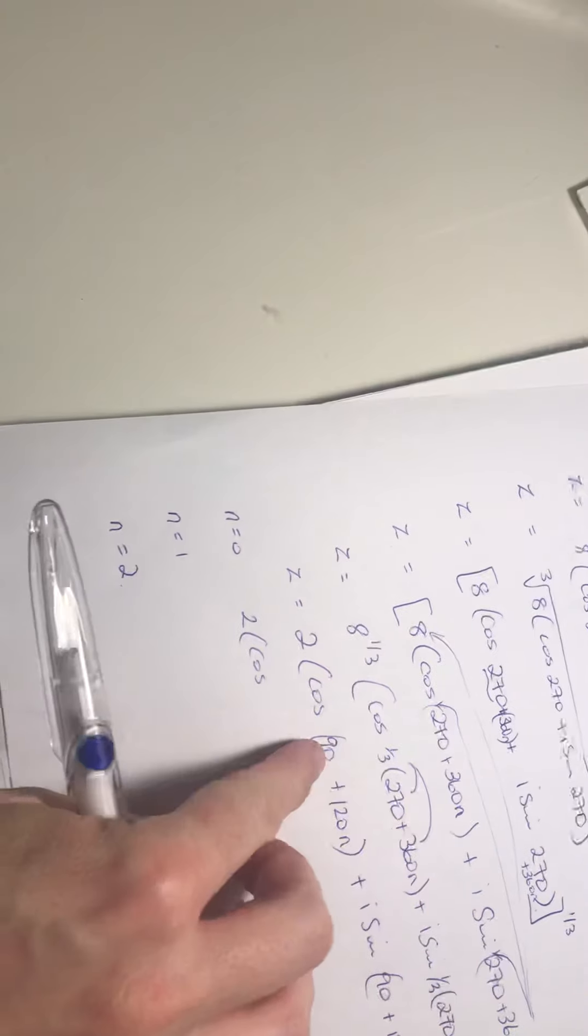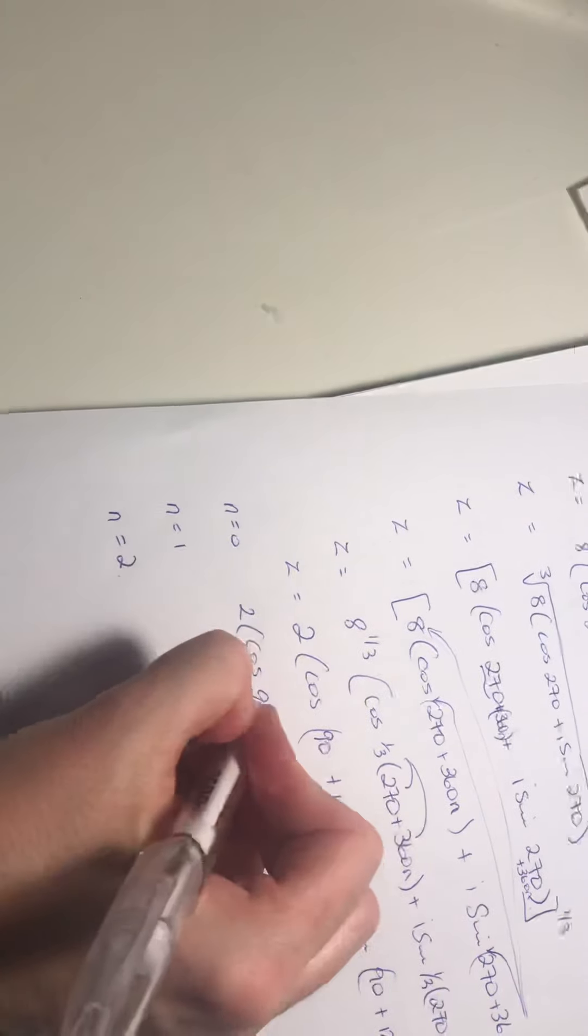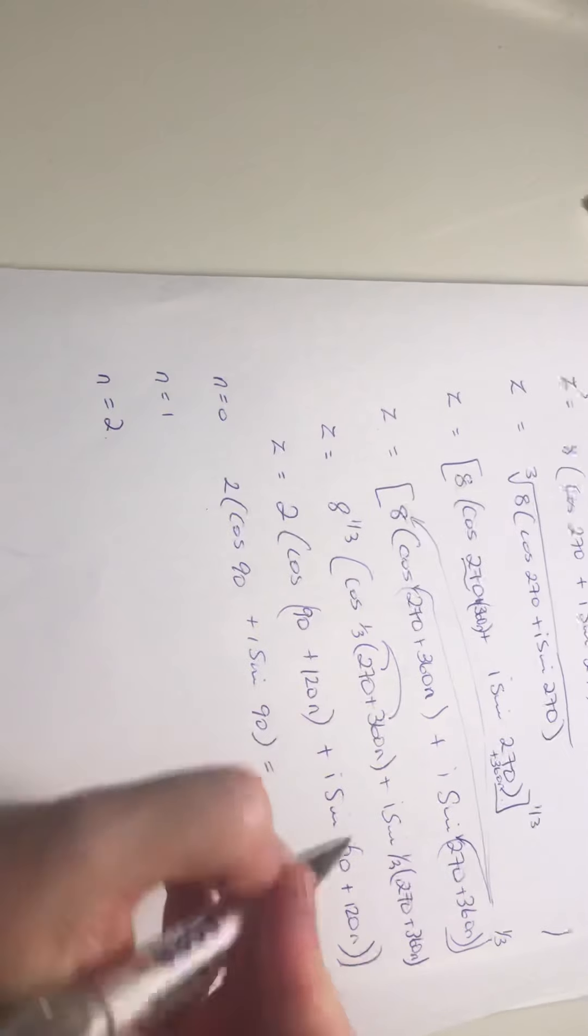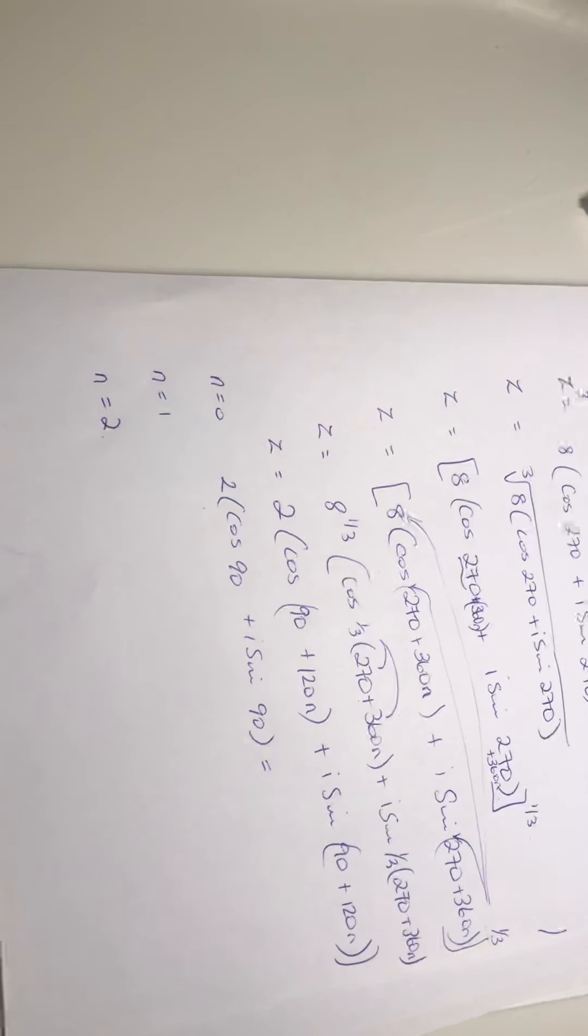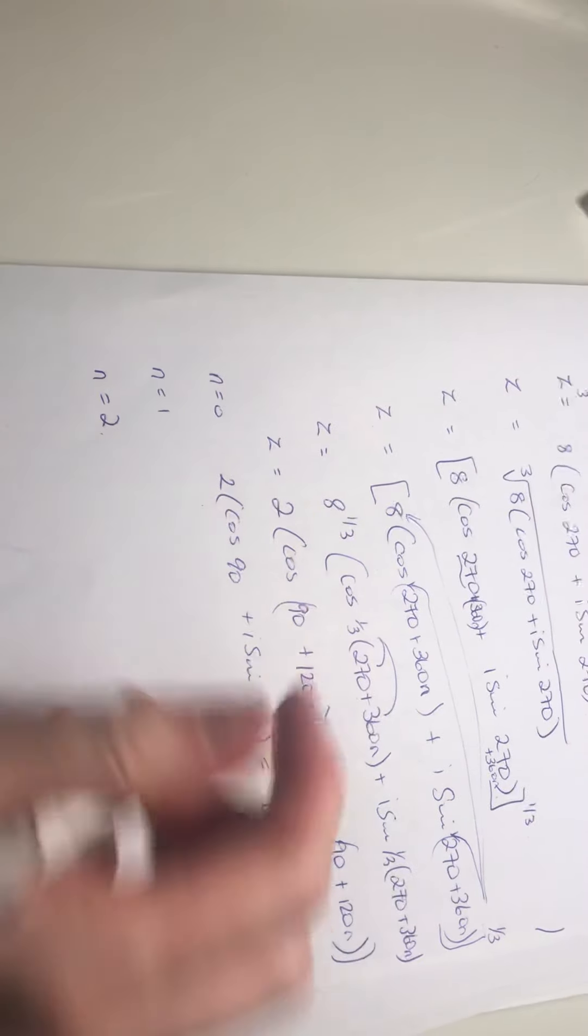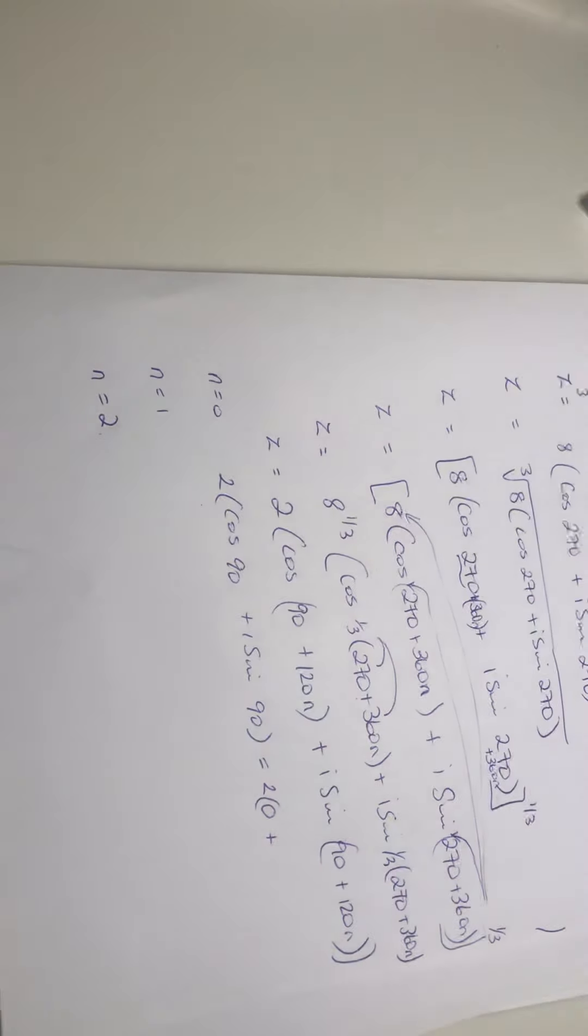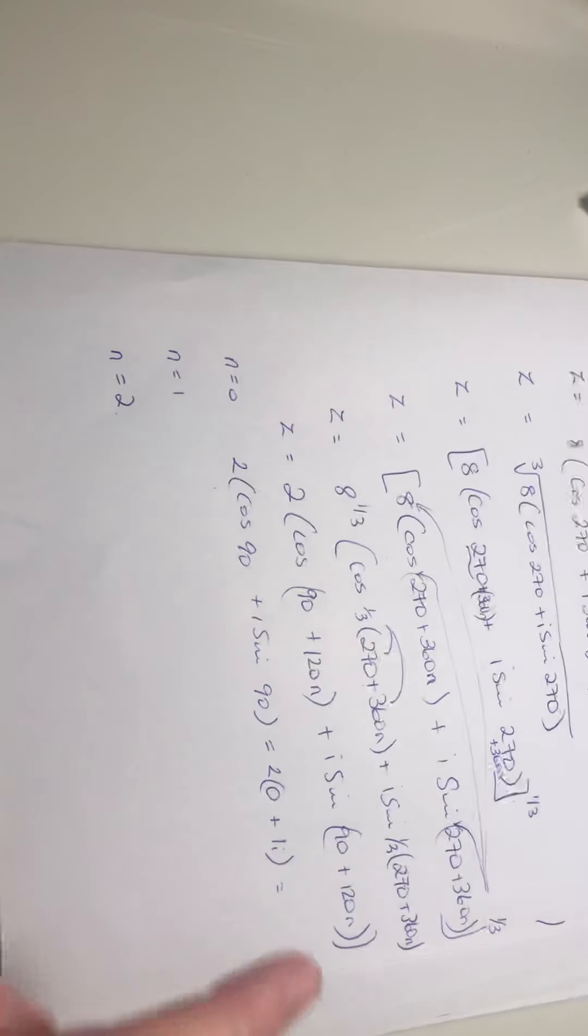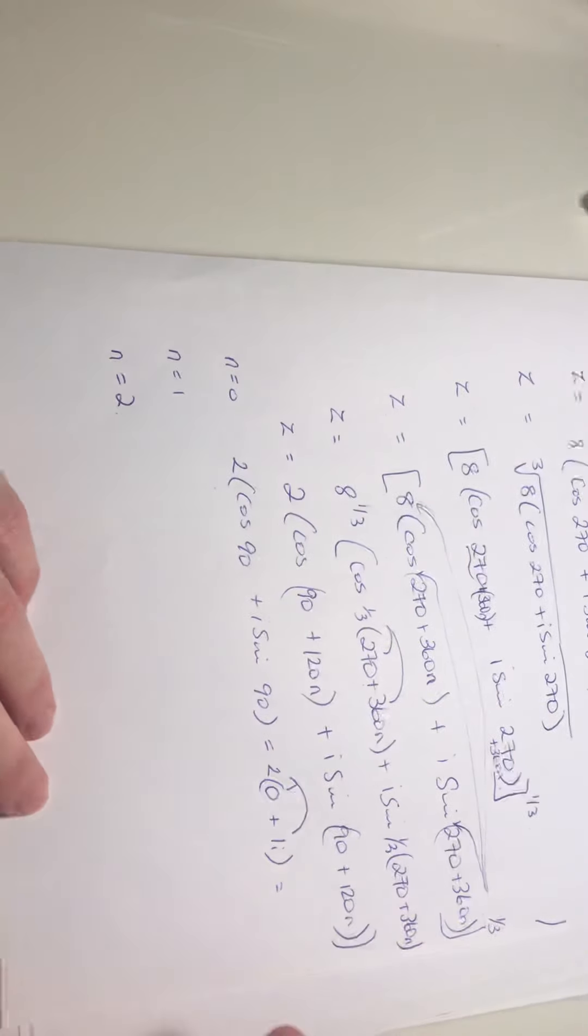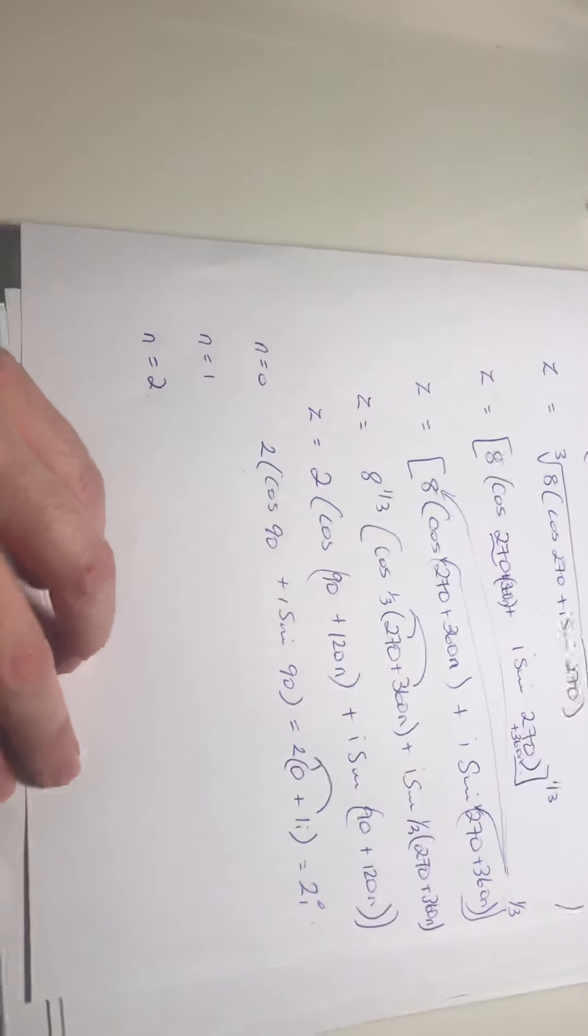If n is equal to 0, we end up with 2 times the cos of 90 plus 120 times 0. So that's just cos of 90 plus i sine, same again, 90. What is the cos of 90? 0. So we have 2 times 0 plus sine of 90, then I think it's 1. Which gives me plus 2i. So there's one solution.